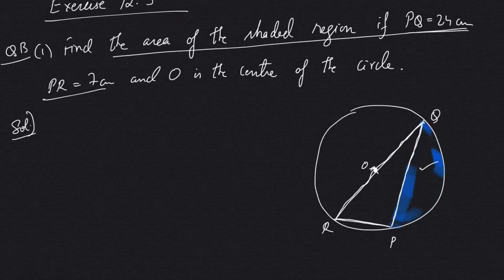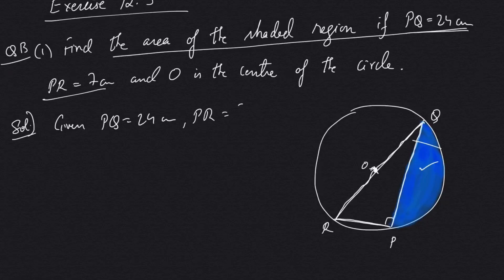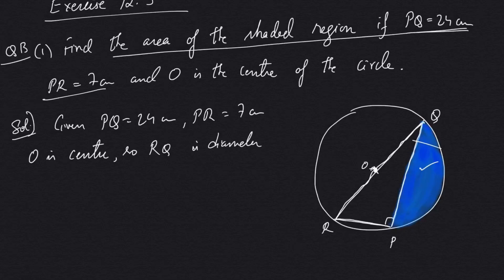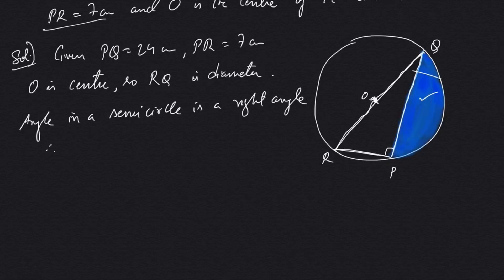From our previous knowledge, the angle in a semicircle is 90 degrees. So this angle is going to be 90 degrees. Let's write down the given values: PQ equals 24 centimeters, PR equals 7 centimeters, and O is the center, so RQ is the diameter.